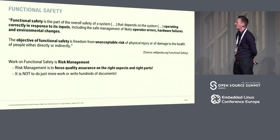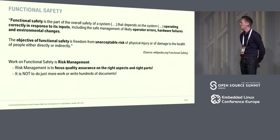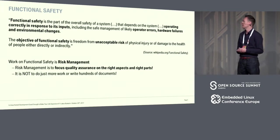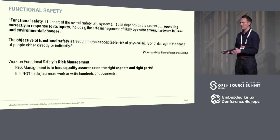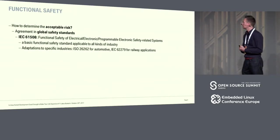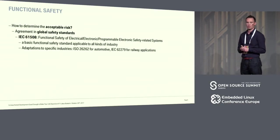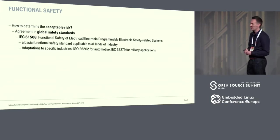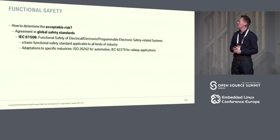Work on functional safety is not traditional software development — it's actually a risk management activity. This means you're going to try to have a software development process, and your task is to find out how to set up quality assurance in the right aspects and the right parts of your development.